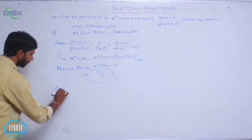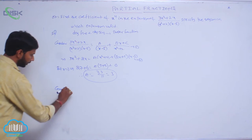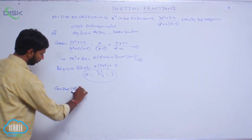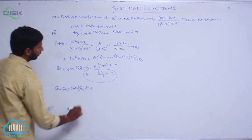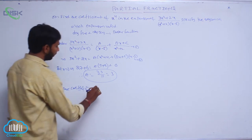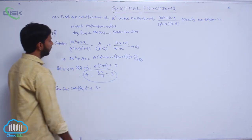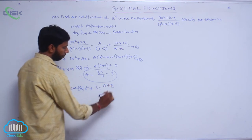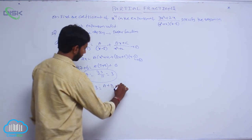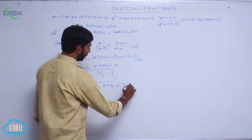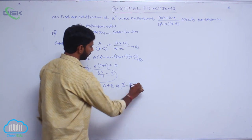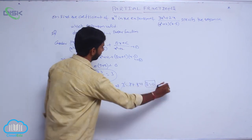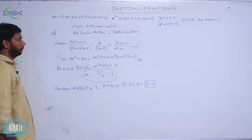Compare the coefficient of x² on both sides. The coefficient of x² on the left side is 3, equal to A + B on the right side. That implies 3 = 3 + B, therefore B = 0.